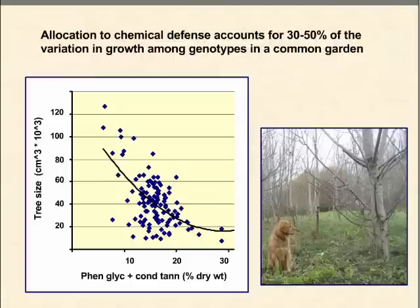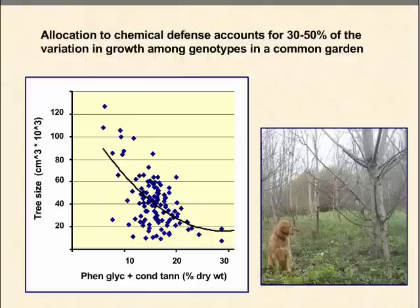We see similar results with much larger trees in field situations. We've been assessing growth and chemistry of Aspen planted out as young saplings in a common environment — now for about 12 years near Madison, Wisconsin — and consistently we see that allocation to chemical defenses accounts for roughly 30 to 50 percent of the variation in growth among genotypes in this common garden.